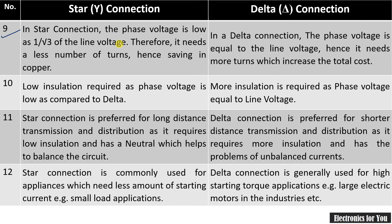In star connection, the phase voltage is low and therefore it needs fewer turns, since it has to bear less voltage — so in star connection the number of turns will be less. Whereas in delta connection, as line voltage and phase voltages are equal, it will require more turns. Also, low insulation is needed in star connection, while more insulation is required for delta connection.